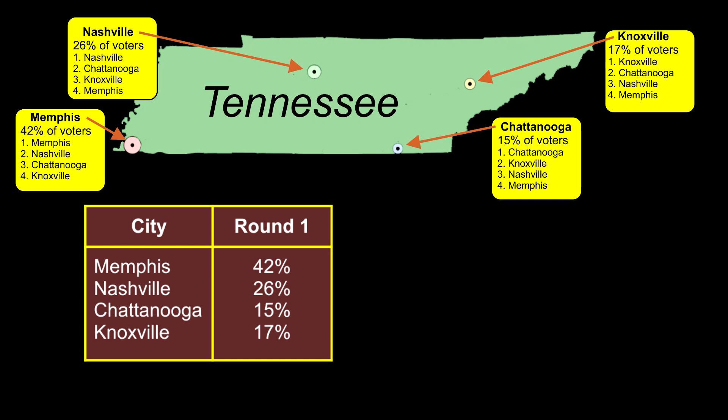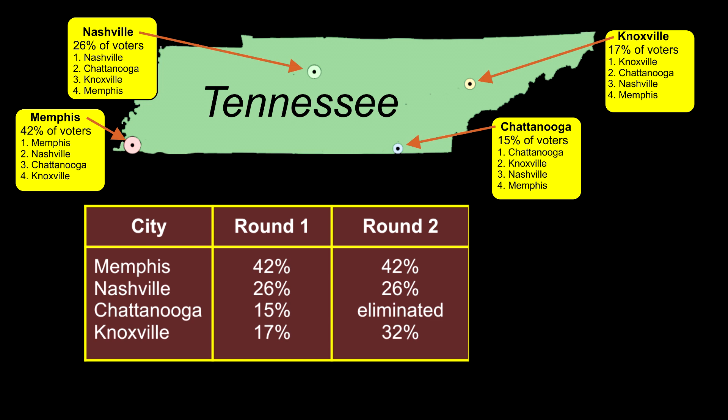But the instant runoff algorithm says that we don't stop until a candidate has at least 50% of the vote. Therefore, with instant runoff voting, we proceed to a second round of vote counting. The algorithm says to eliminate the lowest vote getter and count the second place votes for that candidate. That means Chattanooga is eliminated, and its second place votes are counted.